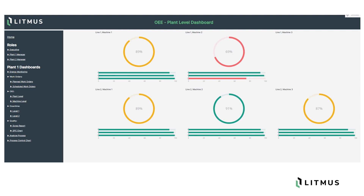We can drill down into the plant-level dashboard to see that machine two in line one and plant one has a red flag, along with three other machines with potential issues reflected in orange. Let's focus on line one, machine two for the purpose of this example.